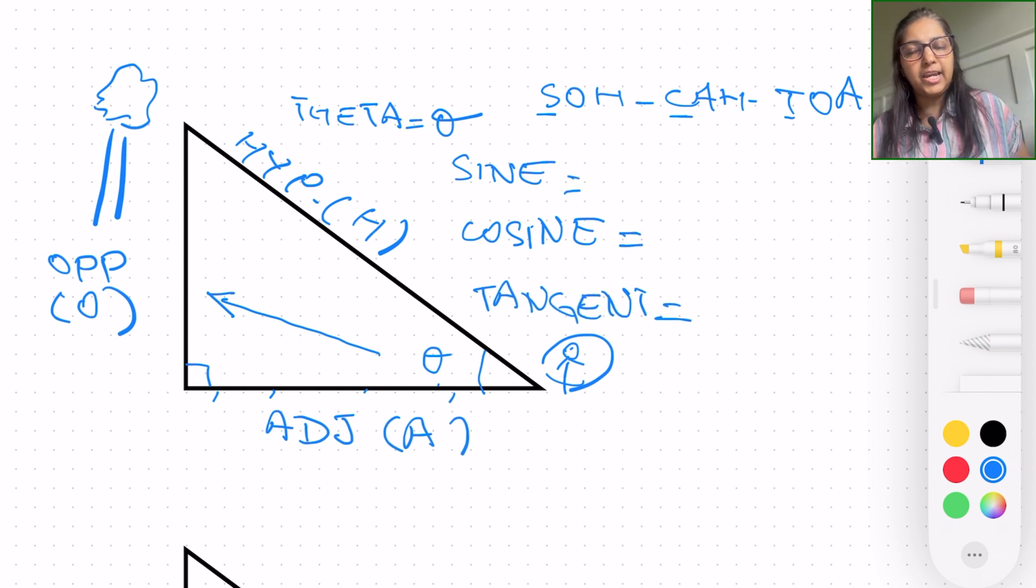These are basically names of angles that we have given, just like how you and I have names for our identity. My name is Shruti and you identify me with my name, right? Same way: sine of an angle, cosine of an angle, tangent of an angle. These are the three basic underlying trigonometric angle measurement ratios for you right now.